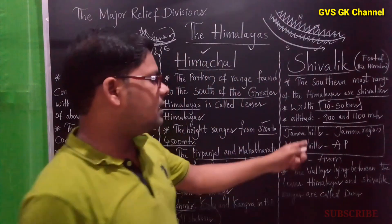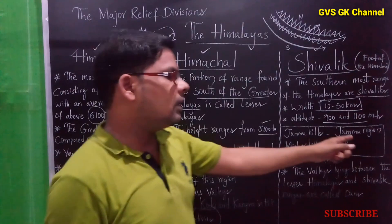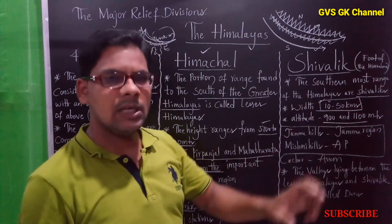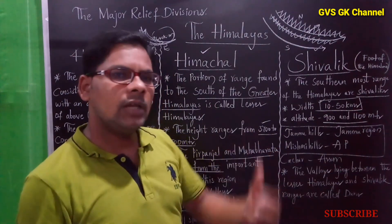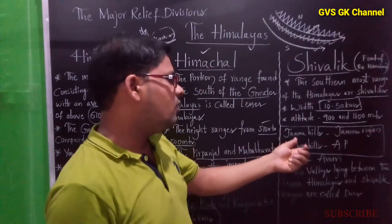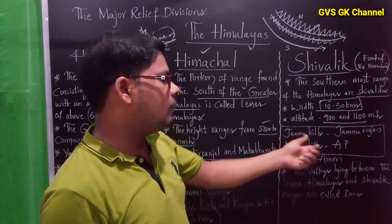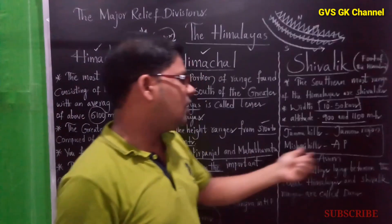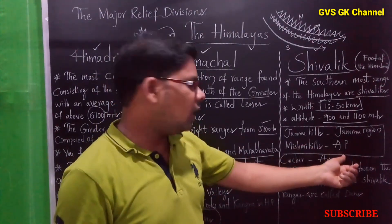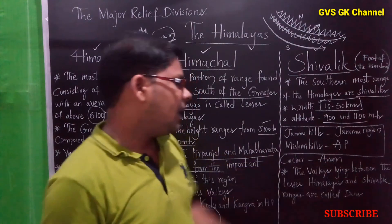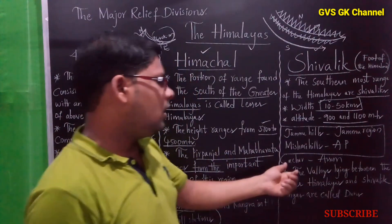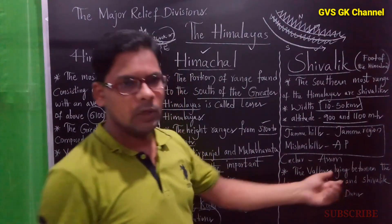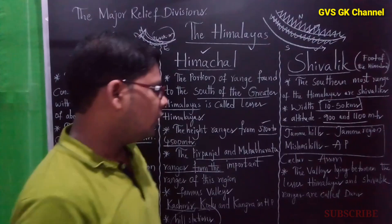There are hill stations in the northeastern part of this region that are called by different names in different places. For example, Jammu Hills in the Jammu region, Mishmi Hills in Arunachal Pradesh, and Cachar Hills in Assam.